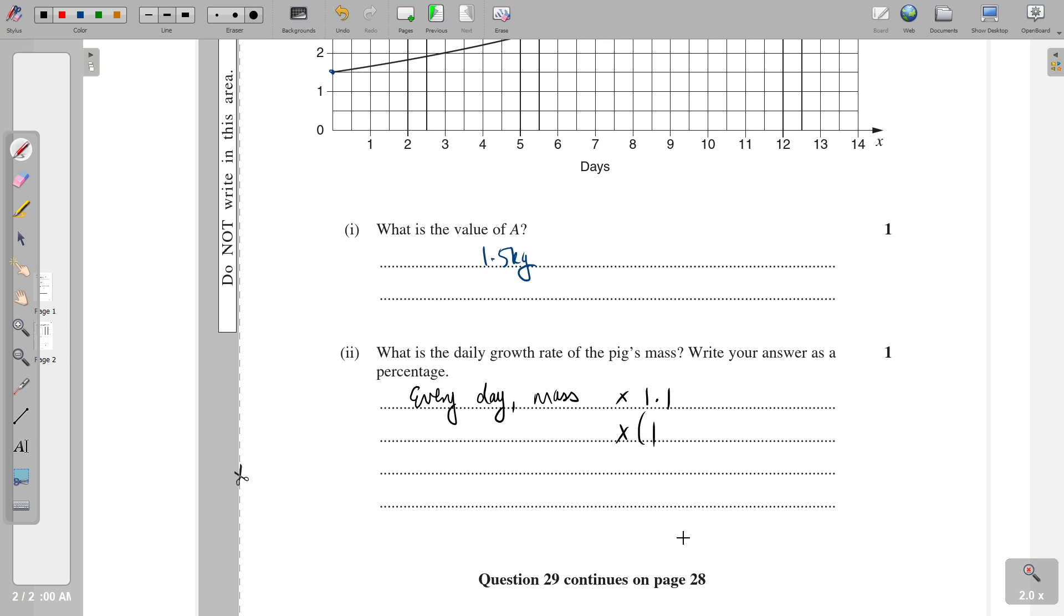And so we can interpret this 1.1 to really mean one whole copy of what the mass used to be, plus an additional 0.1, which implies that there is a 10% growth each day.